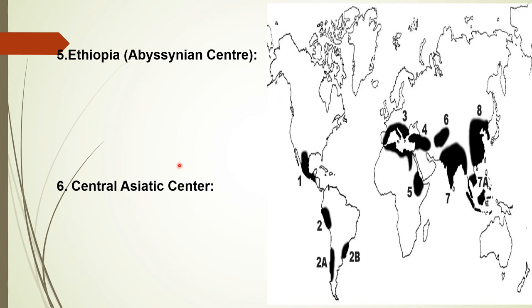Ethiopia is also the origin of coffee, okra, castor bean, and sesame. The Central Asiatic center includes northwest India such as Punjab, Northwest Frontier Provinces, and Kashmir, Afghanistan, Tajikistan, and western Tian Shan. It is the primary center of origin of grains and legumes like common wheat, club wheat, shot wheat, peas, lentil, horse bean, chickpea, moong bean, mustard, flax, and sesame.